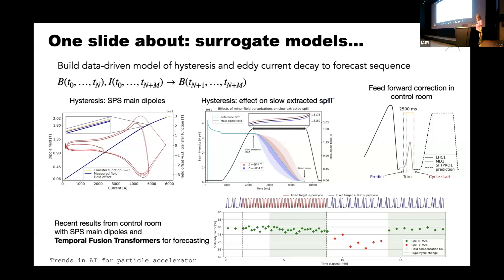The spill duty factor — a measure of spill quality — is also affected by hysteresis: depending on the cycles played before, the expected field changes. We can see that when the compensation is switched on, it does not degrade the spill duty factor. When LHC cycles are added to the supercycle without compensation, the spill duty factor drops; switching the compensation back on restores it. This is all working in principle — more to come soon.